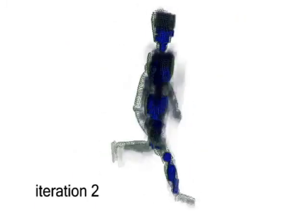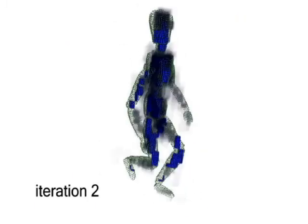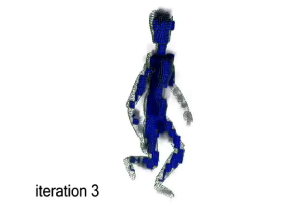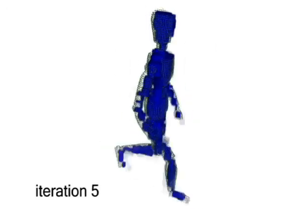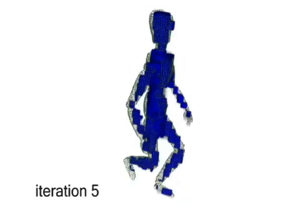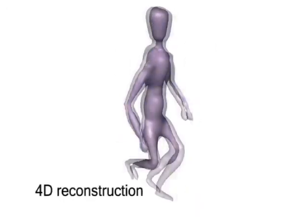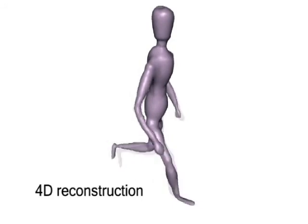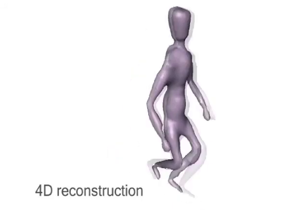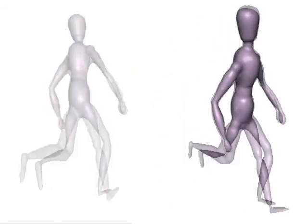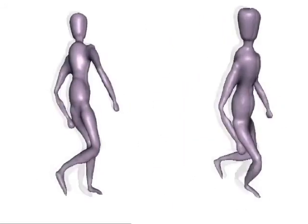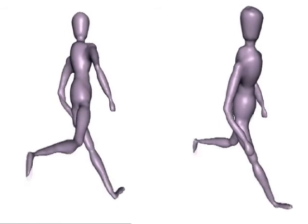The flow solution converges nicely to a solid of consistent topology. Using the flow as well as the original data, we can reconstruct an implicit surface that is essentially correct, even where there was no surface data at all.